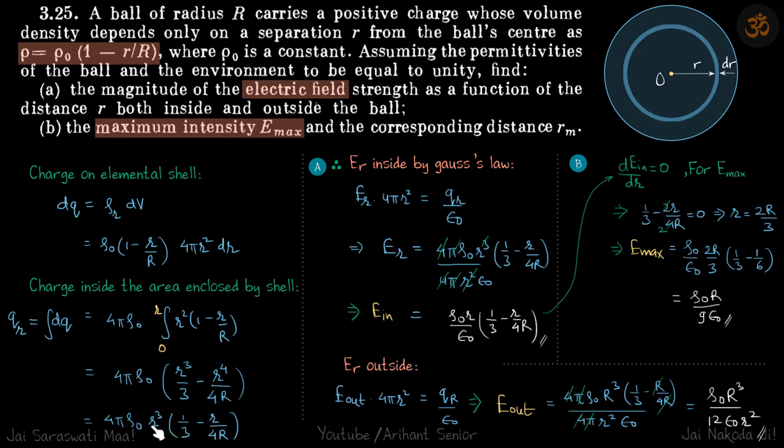So then if you just put capital R here, you will get your E out as this q_R which we will get from here divided by epsilon naught divided by 4 pi r squared which will give your answer.